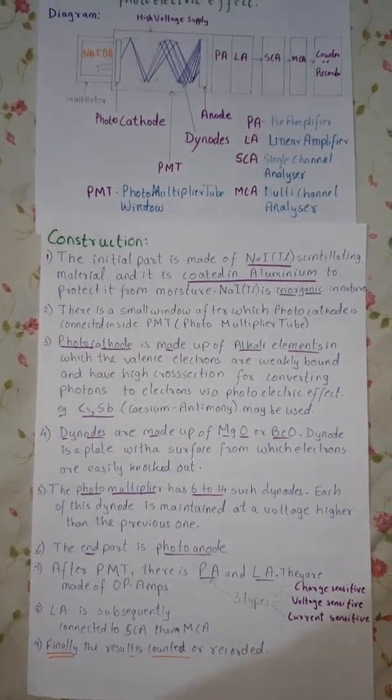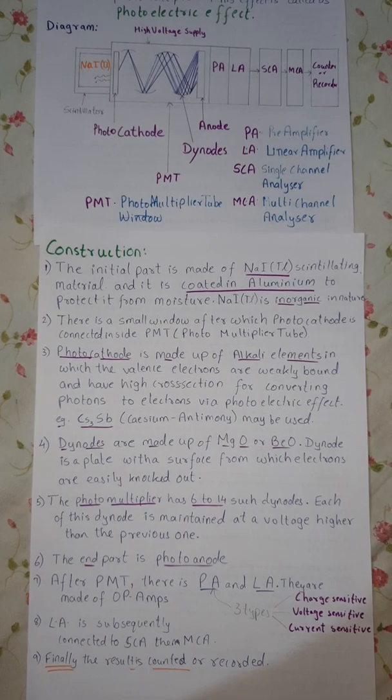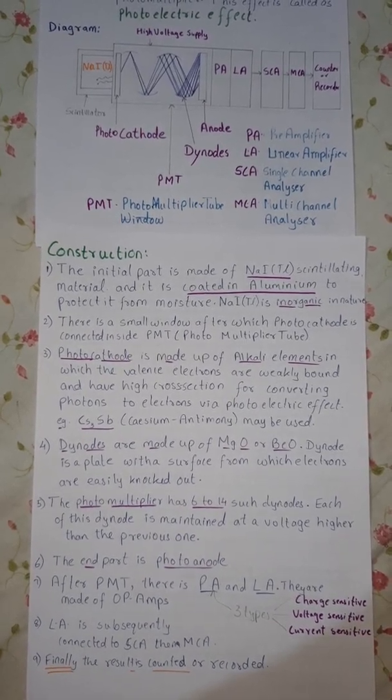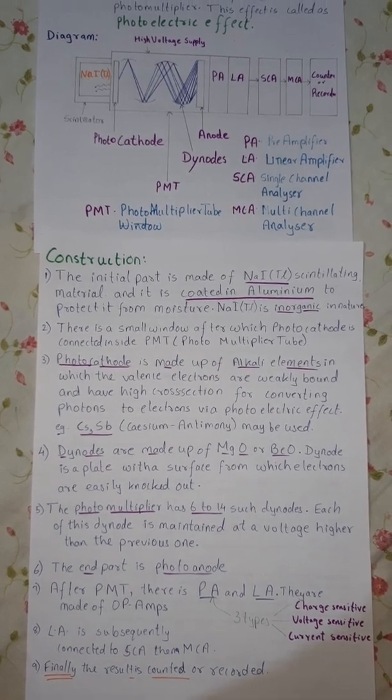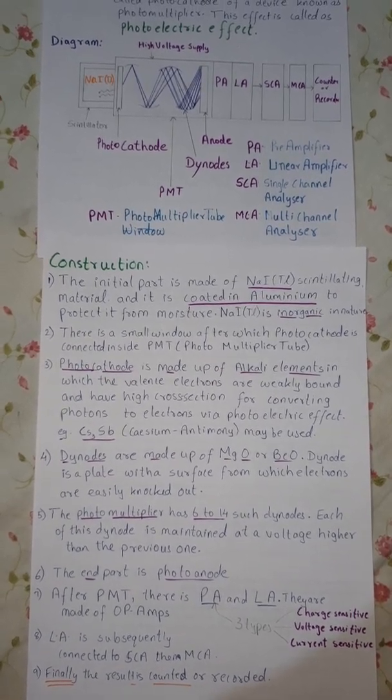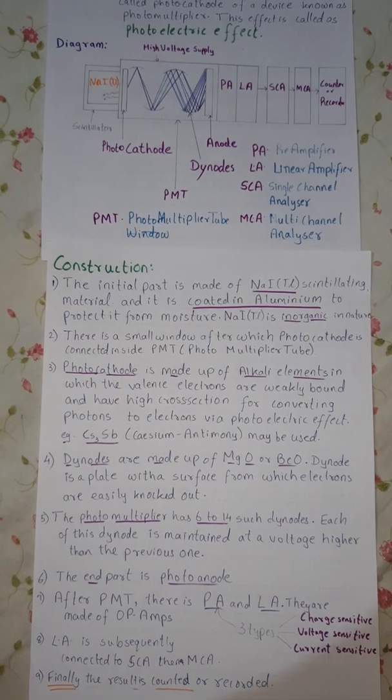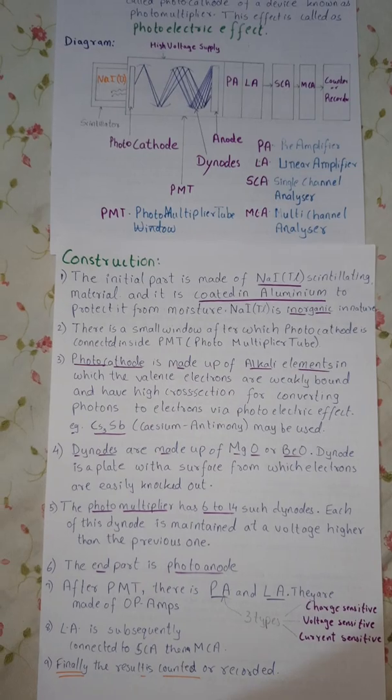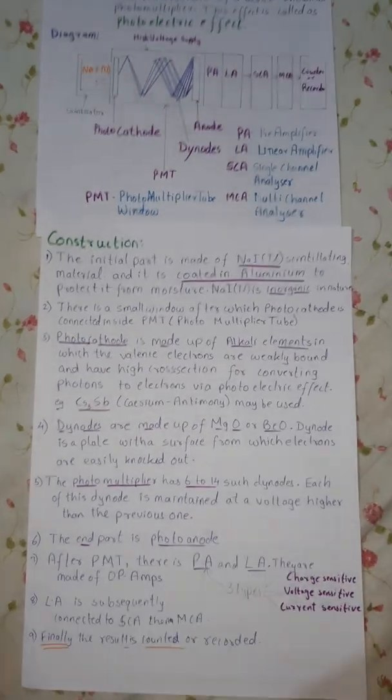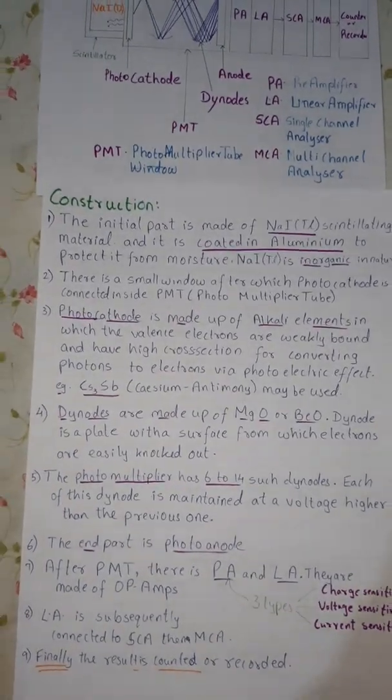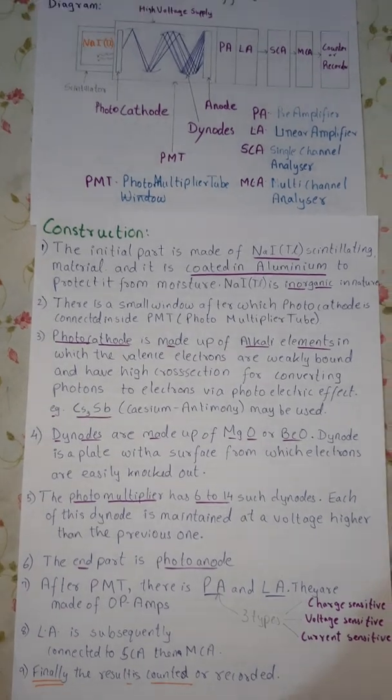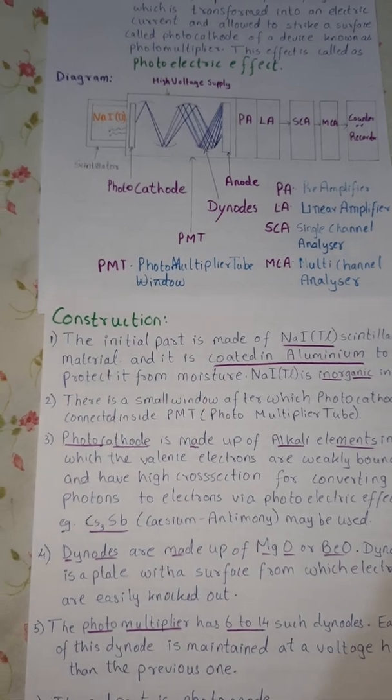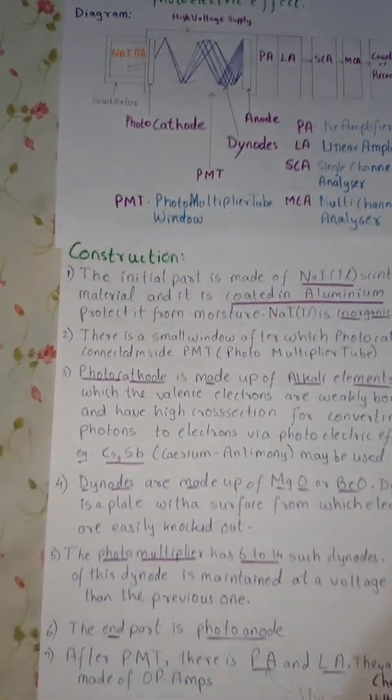Next is the dinode. The dinodes are made up of magnesium oxide or beryllium oxide. Dinode is a plate with a surface from which electrons are easily knocked out. The photomultiplier has 6 to 14 such dinodes. Each of these dinodes is maintained at a voltage higher than the previous one. For example, if the first dinode has a potential of 100 volt, the next one will be 200 volt and subsequently it increases.